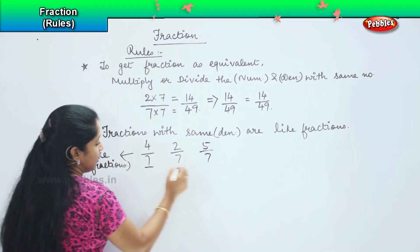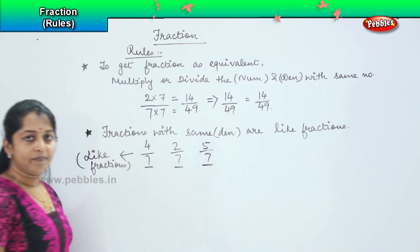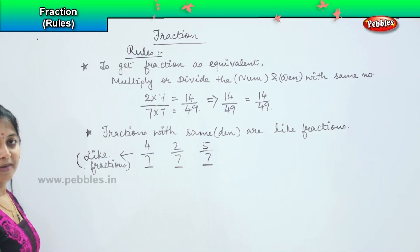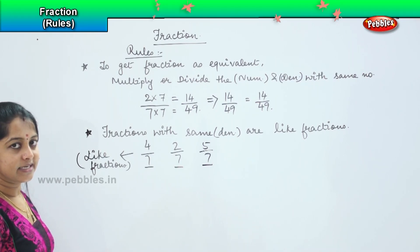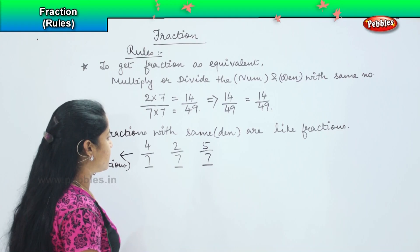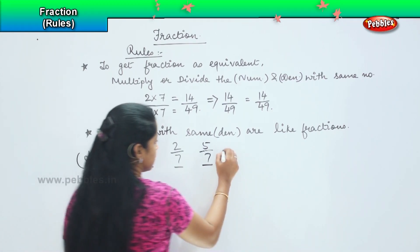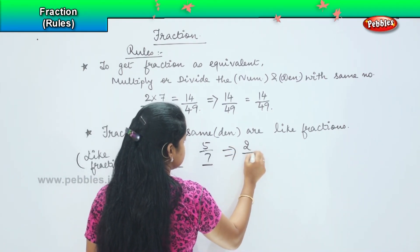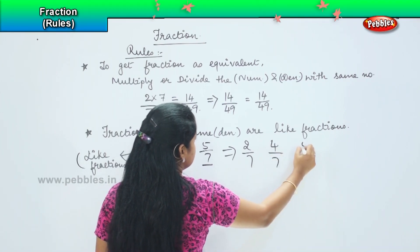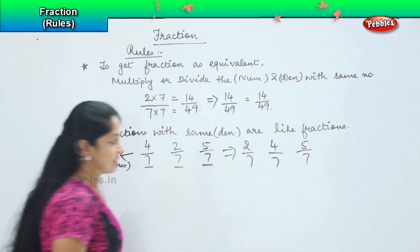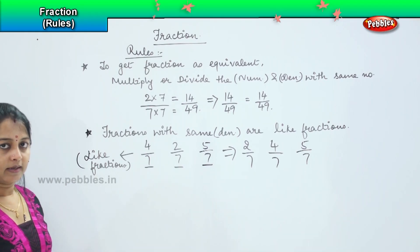Why? Because here the denominator is same. So now it is easy for me to arrange it in the ascending or descending order. I can write as 2 by 7, then 4 by 7, then 5 by 7. Clear?